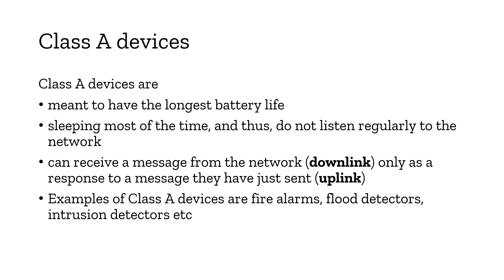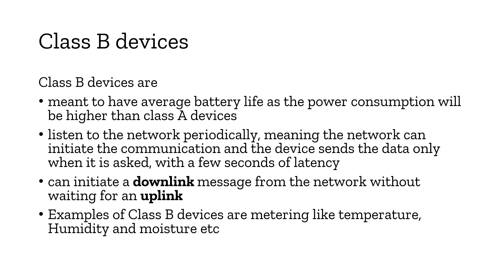Examples of Class A devices include fire alarms, flood detectors, and intrusion detectors. Class B devices have average battery life — somewhere between Class A and Class C — with slightly higher power consumption. Class B devices listen to the network periodically, so the network can initiate communication and the device sends data only when asked, with a few seconds of latency. A downlink can be initiated without waiting for an uplink. Examples include temperature monitoring and humidity monitoring systems.